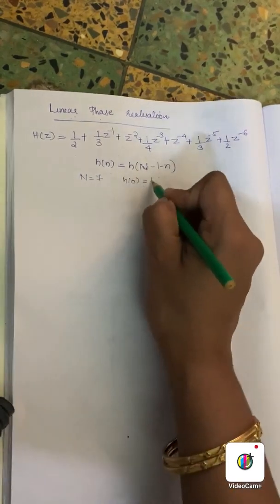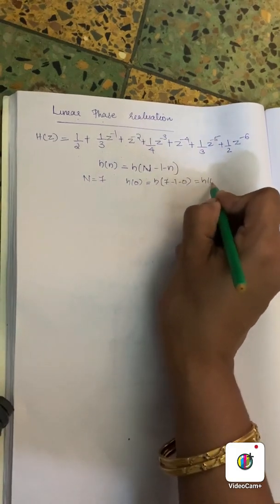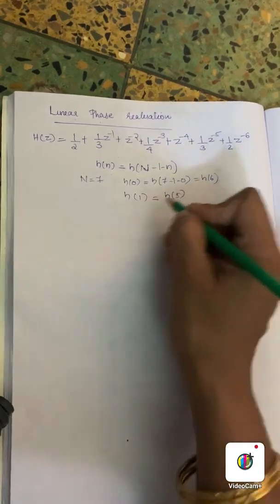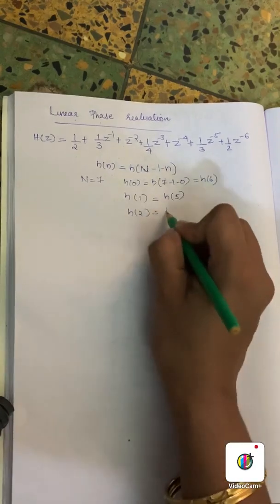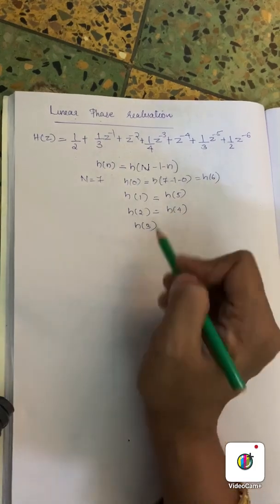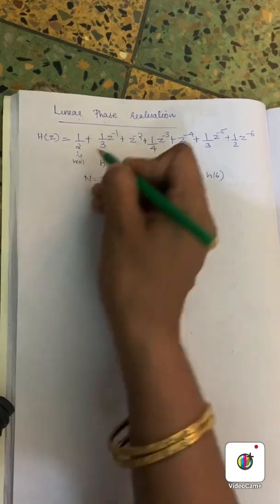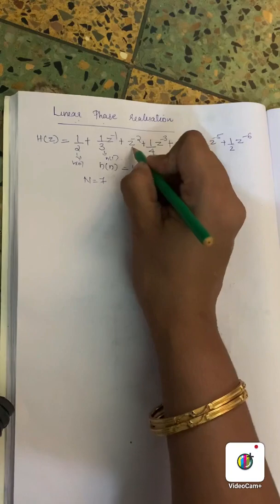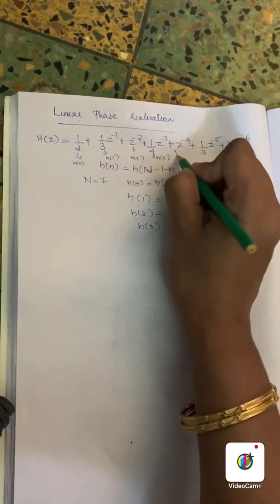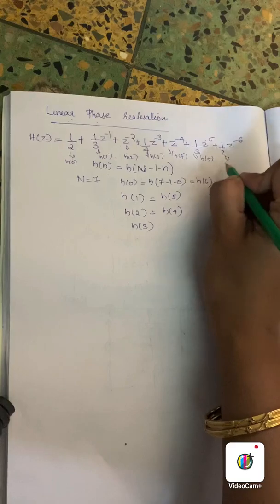With N equal to 7, we apply the symmetry: h(0) equals h(N-1-0) which is h(6). Then h(1) equals h(5), h(2) equals h(4). And h(3) is the center term. So we identify h(0), h(1), h(2), h(3), and h(5), h(6).